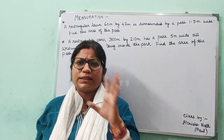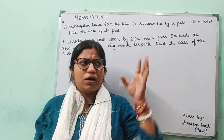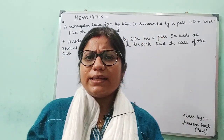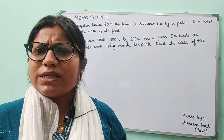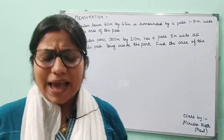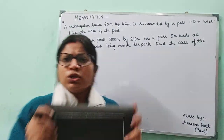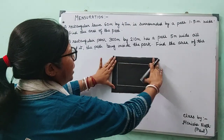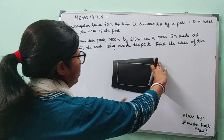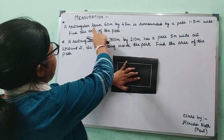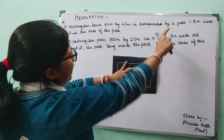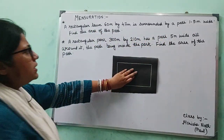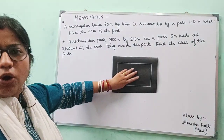As soon as you read this problem, you must have recollected memories of where you have done this problem before. So I will discuss it using some teaching aids today — hands on. Suppose you imagine this is the rectangular lawn. This white marked path I have taken to be my rectangular lawn.